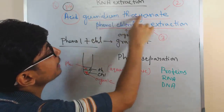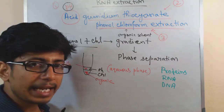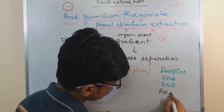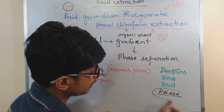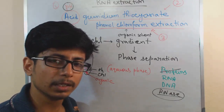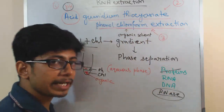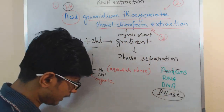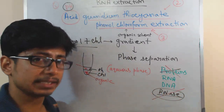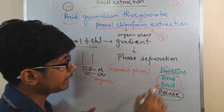Now comes the role of guanidium thiocyanate. Guanidium thiocyanate can degrade proteins as well as RNases. RNases are the enzymes that will degrade RNA, destabilize RNA, and we don't want that. If RNases are present in any small amount, they will ruin the whole experiment. So we want to get rid of RNases. Guanidium thiocyanate is an excellent agent to find the RNases and break them down. We add guanidium thiocyanate to the mixture and allow it to act so it can break down the RNases. Once RNases are gone, and other protein components are also degraded, we are left with only RNA and DNA.